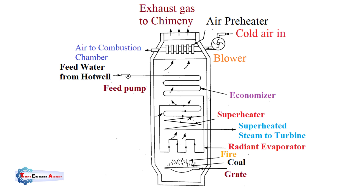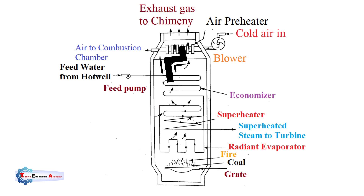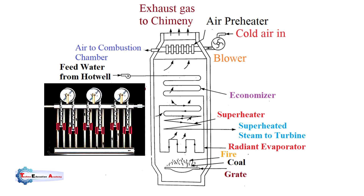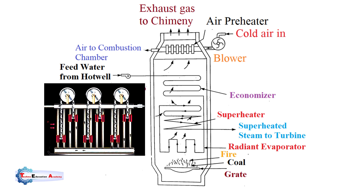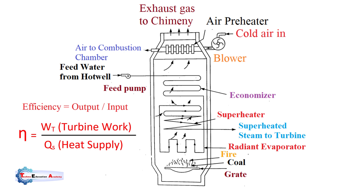Feed water enters at the economizer and leaves as superheated steam at the other end. The economizer is a type of heat exchanger. Before passing the exhaust flue gases to the chimney, they enter the coil of the economizer, and whatever heat is available in those gases is utilized to increase the temperature of the water. This saves fuel and increases the efficiency of the boiler, because when the hot water is supplied to the boiler, less heat energy is required to boil it. The entire operation of feed water heating, steam formation, and superheating is carried out in a single continuous tube.